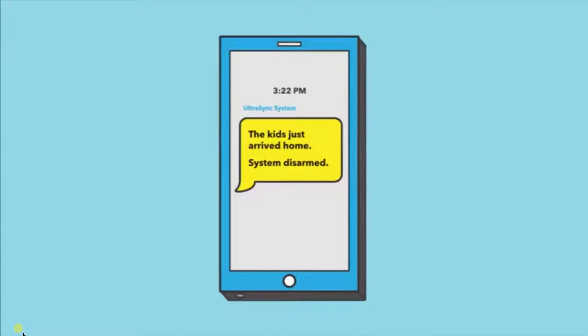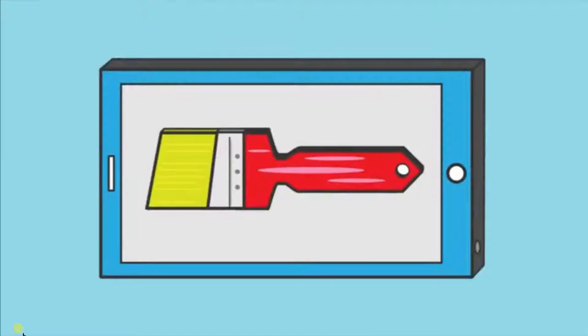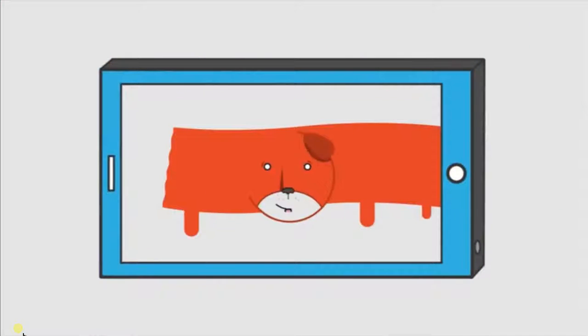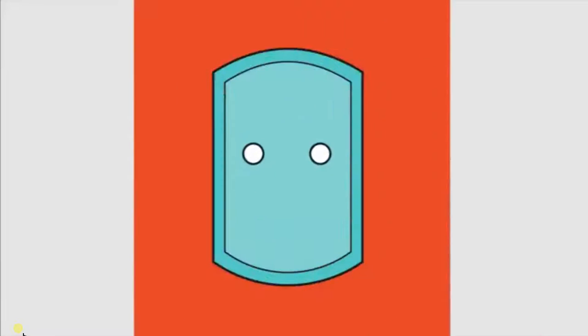Receive a text alert when the kids get home, check in on contractors, or see how your pets are behaving through live streaming video. Create codes for people who need temporary access.